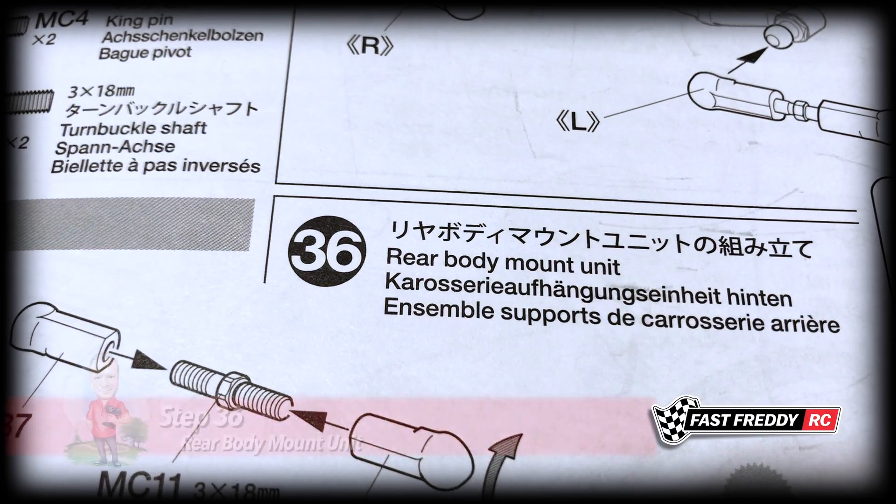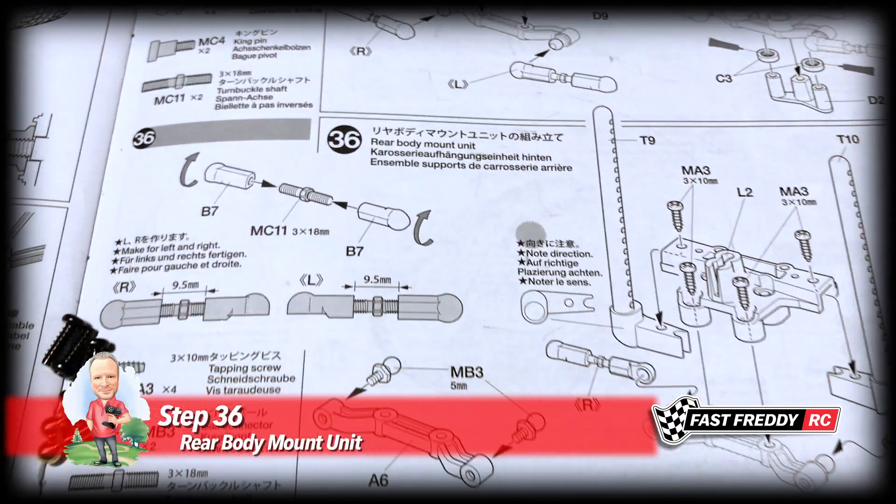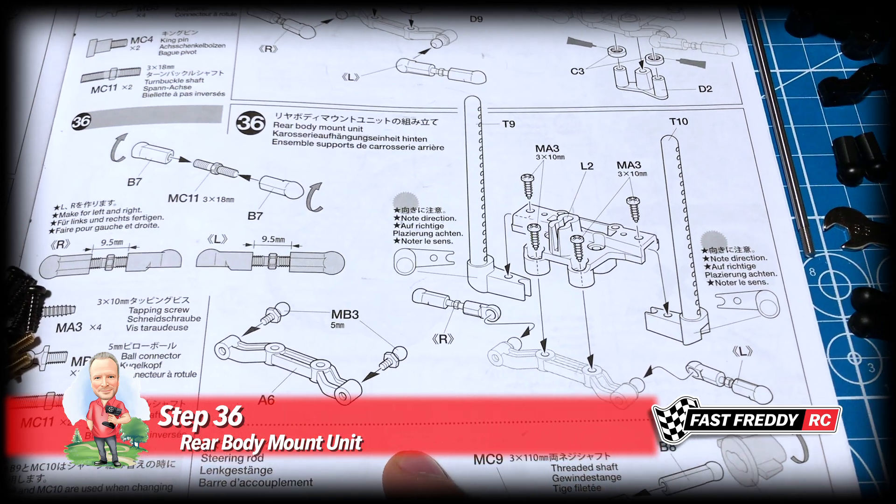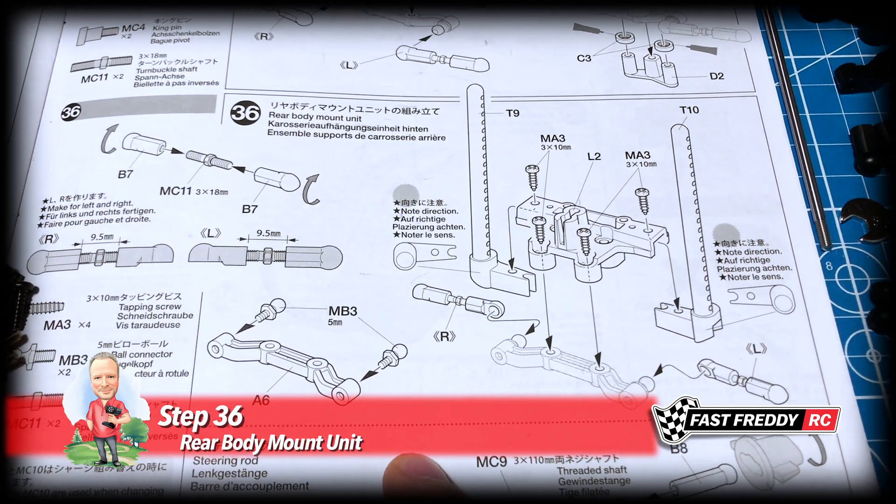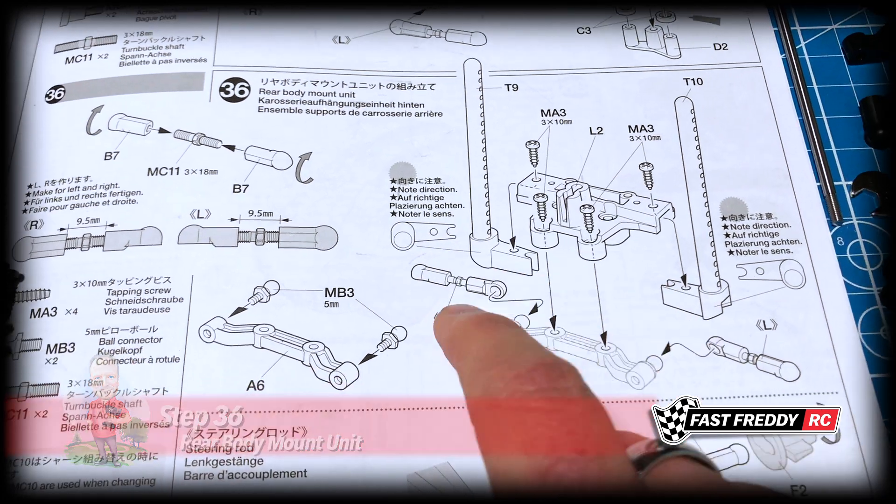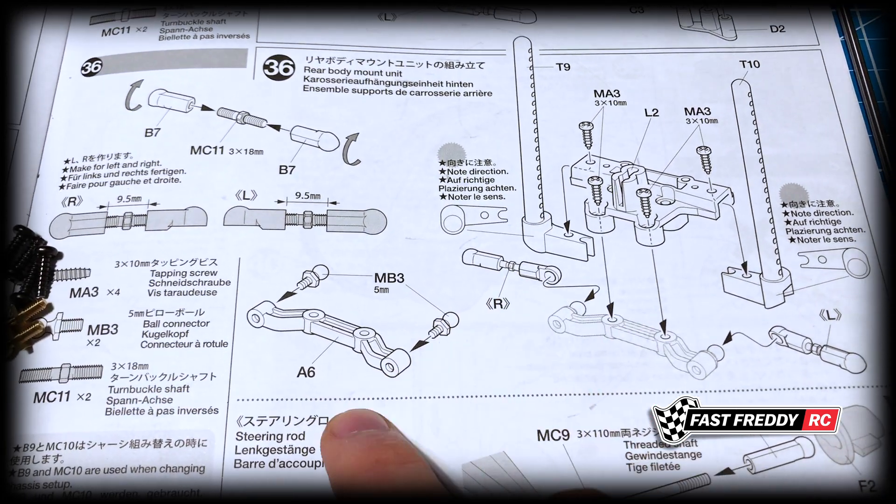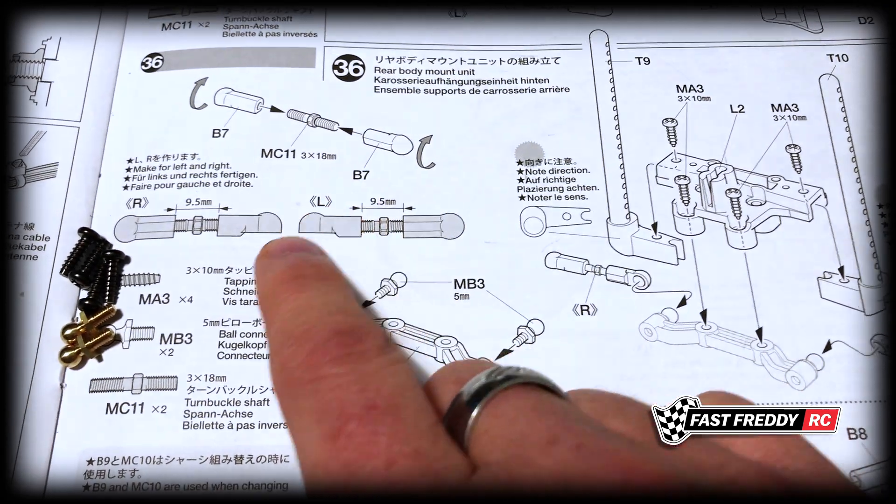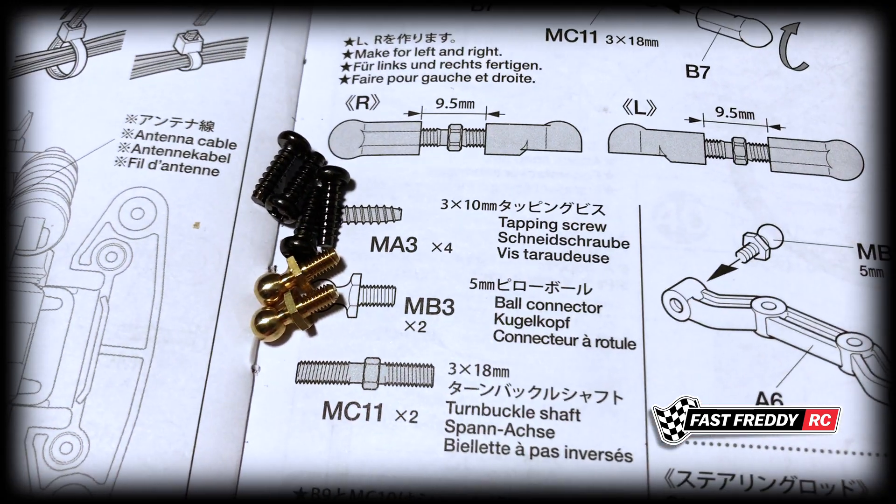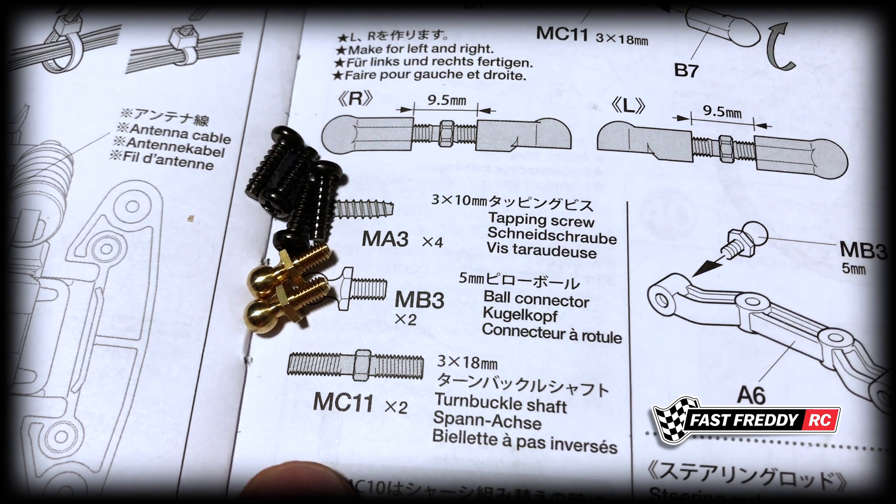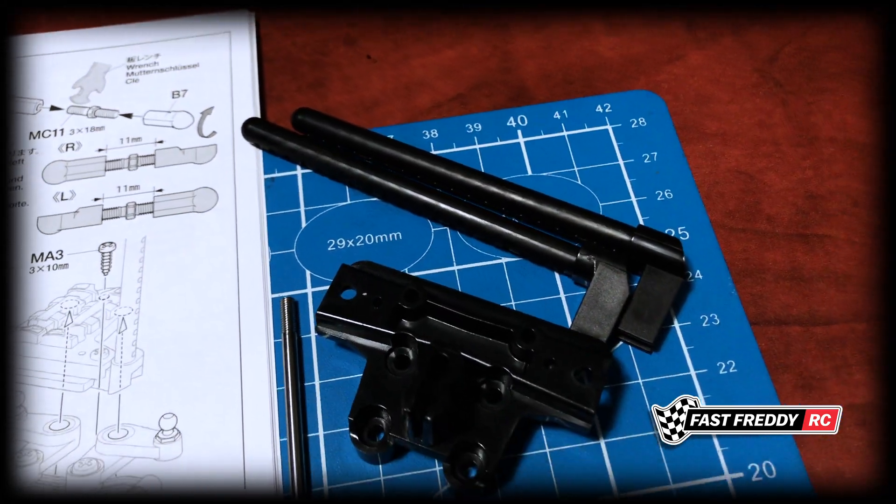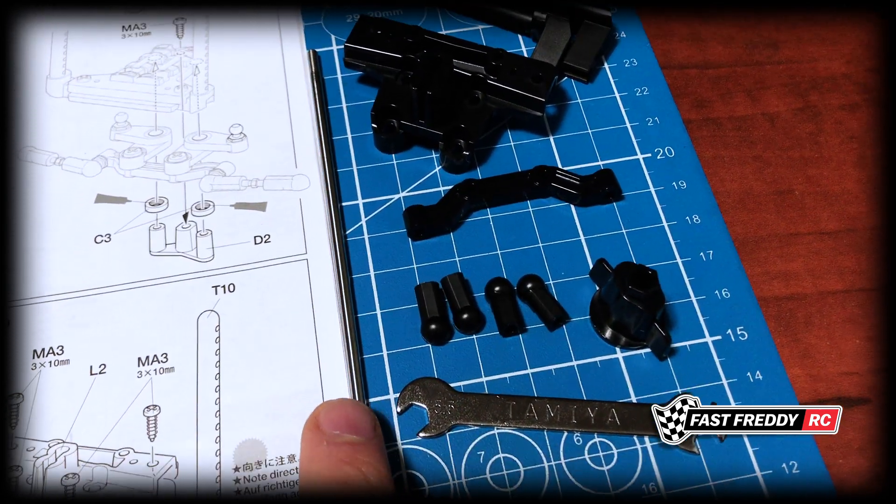For step 36, the rear body mount unit, we're pretty much doing the same thing as what we did in the last step working on the front body mount unit. We've got all these different pieces, the ball arm pieces, and we need to put the ball connectors on. Here are the screws and the ball connectors that we need, and here are all of the parts including the long arm here which is for the steering.